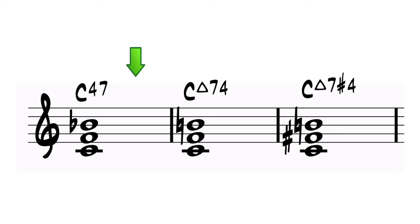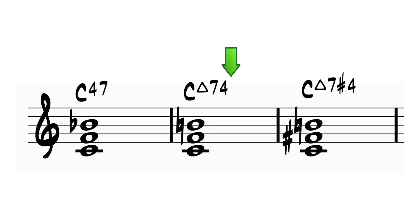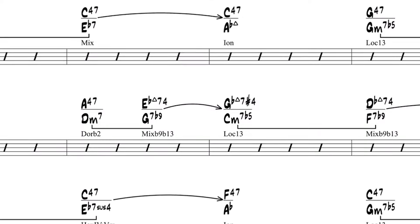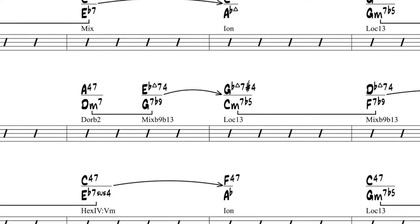Same with the altered quartals. As soon as you see C major7,4, you'll know it represents only the three notes C, F, and B — F is the 4, and B is the major 7. C major7,#4 is just C, F#, and Bb.